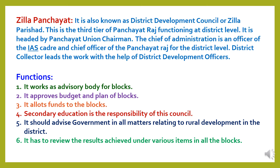The third level of Panchayati Raj system is Jila Panchayat, also known as District Development Council or Jila Parishad. This is the third tier functioning at district level, headed by the Panchayat Union chairman. The chief of administration is an officer of the IAS cadre. District Collector leads the work with the help of district development officers. The functions of Jila Parishad include: acting as an advisory body for blocks; approving budget and plan of blocks; allotting funds to blocks; responsibility for secondary education; advising the government on all matters relating to rural development in the district; and reviewing results achieved under various items in all the blocks.